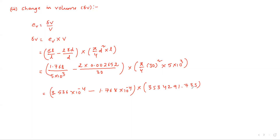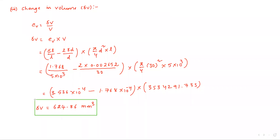Calculating: 1.768×10⁻⁴ × 3,534,291.735 = 624.86. Change in volume δV = 624.86 mm³. This is the final required change in volume.